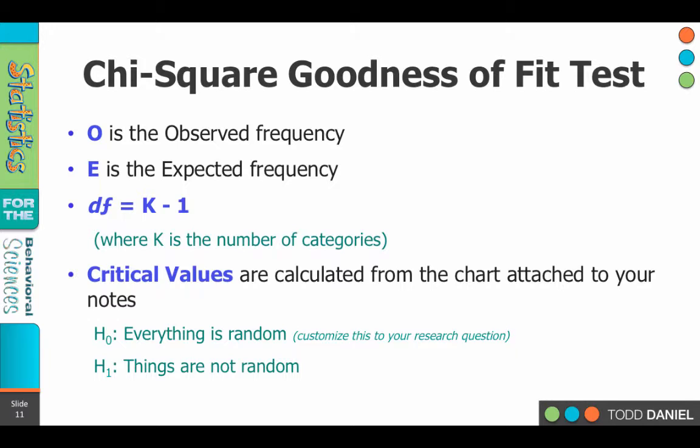Here are some definitions that we'll want to be sure we know. We'll be using the letter O to stand for observed frequencies — that's what we actually find in our sample. E will be the expected frequencies — that's what we would have found if everything was occurring randomly. The degrees of freedom is K minus 1, where K is the number of categories. So if we have six types of soda, our degrees of freedom would be five, because K minus 1 is 5.